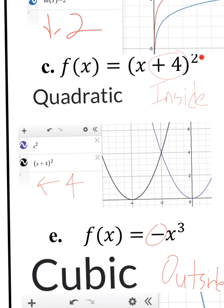This next graph has the power of 2 as the highest power, so it's a quadratic function. I have plus 4 in parentheses — I'm plussing 4 on the inside. You know it's on the inside because not only are you squaring x, you're squaring the plus 4 as well. When you graph it, the original goes through (0, 0) and the new one goes through (−4, 0), so it shifted left 4 units. Plussing 4 on the inside made it go left 4.